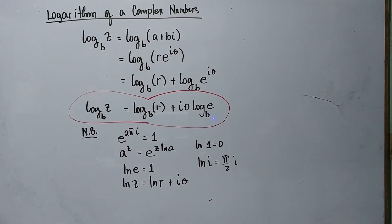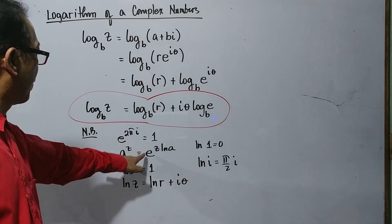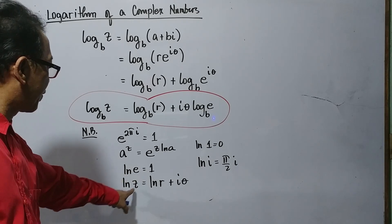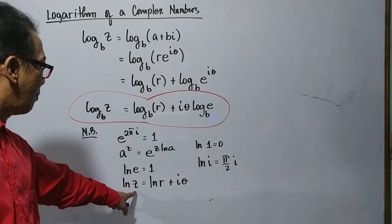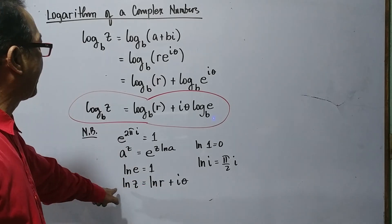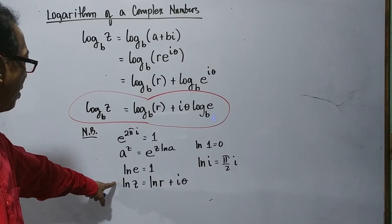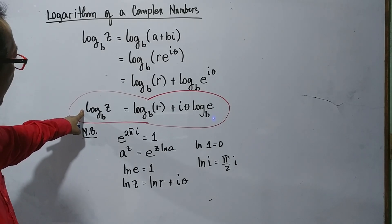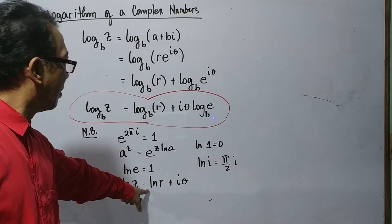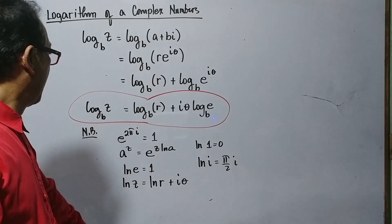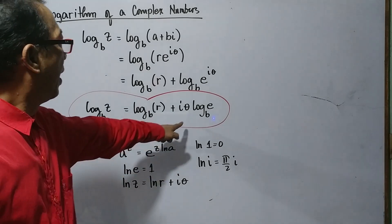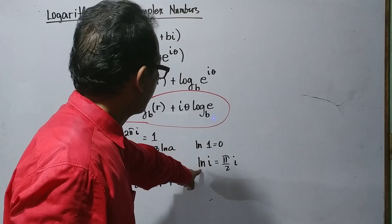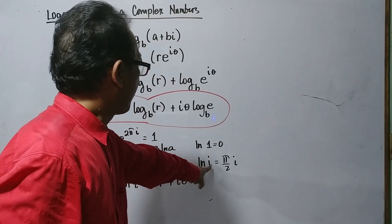Remember that e to the pi·i equals 1, and the natural logarithm of a to the natural logarithm of e equals 1. Also, the natural logarithm of z equals the natural logarithm of r plus i·theta. From the natural logarithm of a complex number, the natural logarithm of e to the base b equals 1. As an example, the natural logarithm of i equals pi over 2 times i.